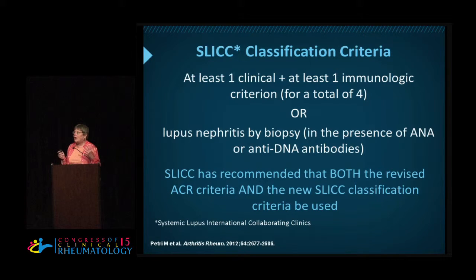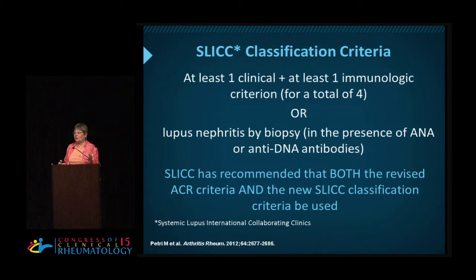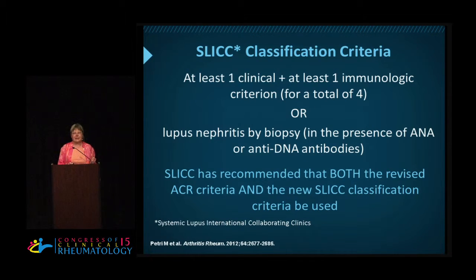So what are the tenets behind the new classification criteria? There are two. The first is that it's necessary to have at least one clinical manifestation and at least one autoantibody, but the total number of criteria need to add up to four — that number four embedded in your subconscious from the ACR criteria, you don't have to mess with. The second principle is that if the patient has lupus nephritis by biopsy, you can stop counting. They obviously have lupus.